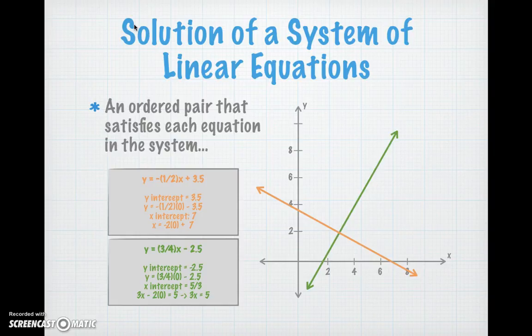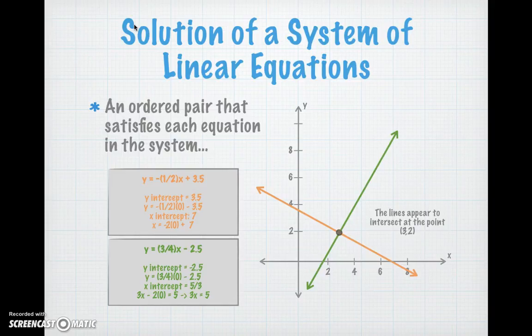Now, if you look at the graph, you see that the two lines intersect at a point. If we estimate that point, we get 3 and 2. That point of estimation is our possible solution.